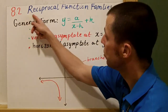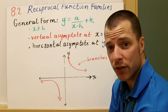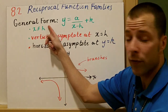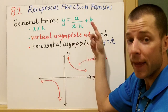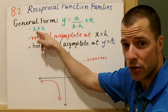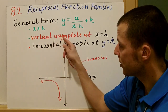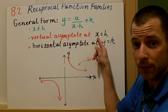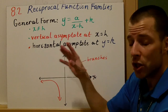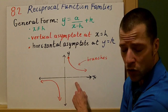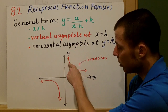Alright guys, welcome to section 8.2, Reciprocal Function Families. Today we're going to spend time graphing these reciprocal functions. The general form of a reciprocal function is y equals a over x minus h plus k. It's important to note that x cannot equal h. H and k play an important role with our asymptotes. The vertical asymptote occurs at x equals h, and the horizontal asymptote occurs at y equals k. The general graph of these functions has branches — those red curves you see when we connect the points.